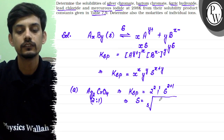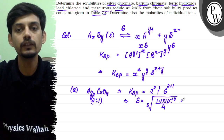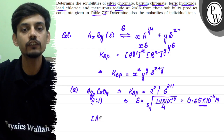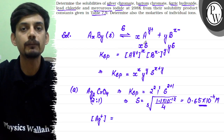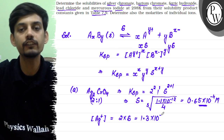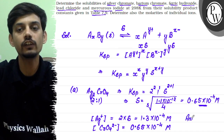The KSP value is 1.1×10⁻¹² divided by 4, giving a solubility of 0.65×10⁻⁴ mol/L. Since the ratio is 2:1, the concentration of Ag⁺ ion is double the solubility: 1.3×10⁻⁴ mol/L. The chromate ion concentration equals the solubility: 0.65×10⁻⁴ mol/L.